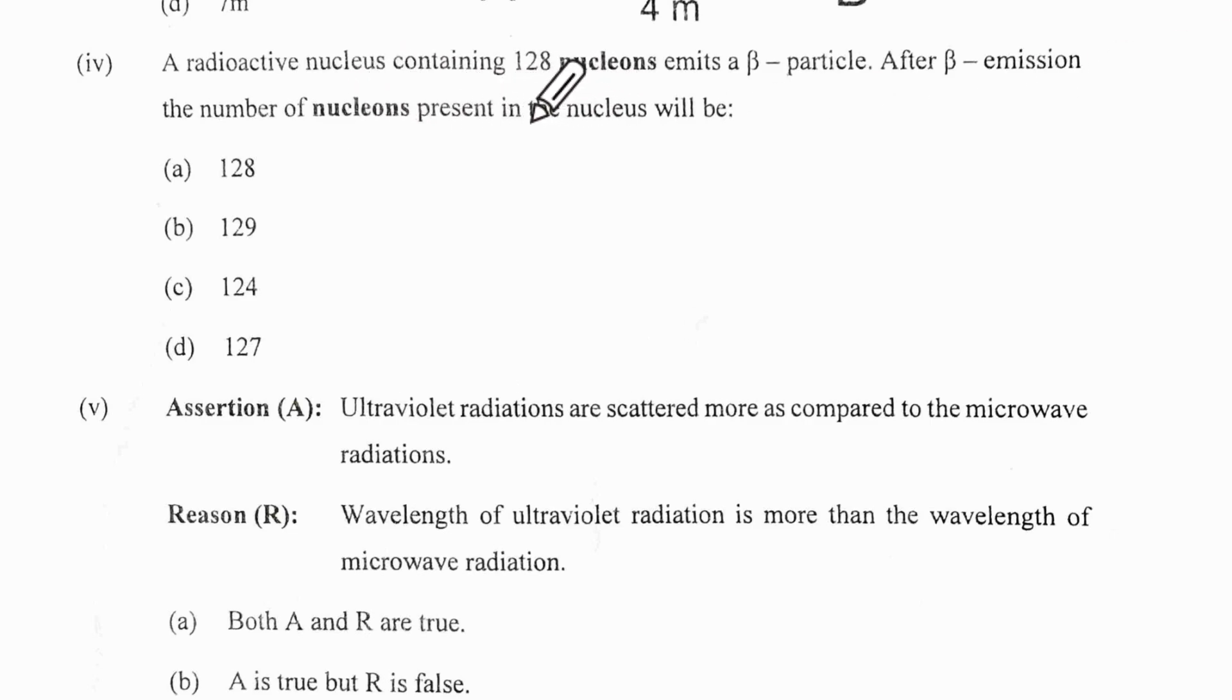A radioactive nucleus containing 128 nucleons, which means protons and neutrons together, emits a beta particle. After beta emission, P becomes P+1 and neutrons become N-1. When you add these, you will have this getting cancelled and P+N means 128. It will remain 128.